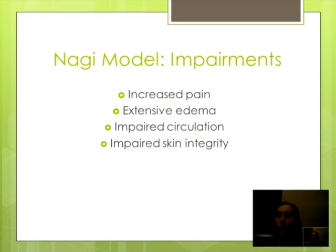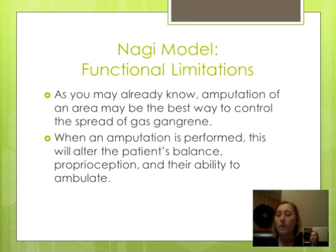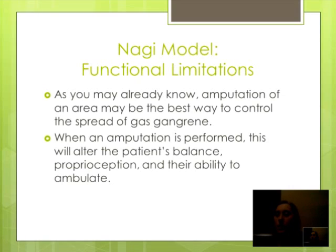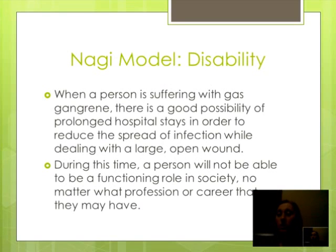Impairments of gas gangrene include increased pain, extensive edema, impaired circulation, and impaired skin integrity, just to name a few. Regarding functional limitations, the amputation of an area may be the best way to control the spread of gas gangrene. When an amputation is performed, this will alter the patient's balance, proprioception, and their ability to ambulate normally. As for disability, when a person is suffering with gas gangrene, there is a good possibility of prolonged hospital stays in order to reduce the spread of infection while dealing with a large open wound. During this time, a person will not be able to fulfill a functioning role in society, no matter what profession or career they may have.